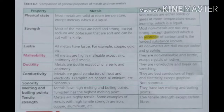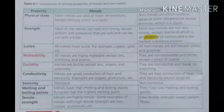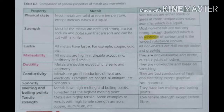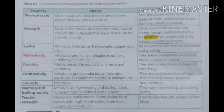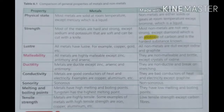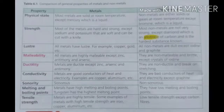Regarding conductivity, metals are good conductors of heat and electricity — examples include copper and aluminium. Non-metals are bad conductors of heat and electricity. The next property is sonority, which means producing sound. Metals are sonorous and non-metals are non-sonorous.